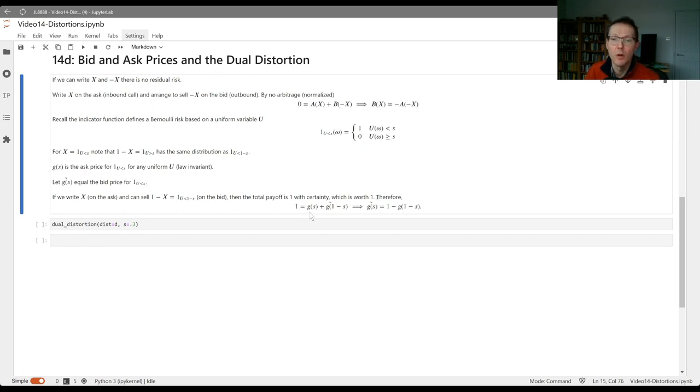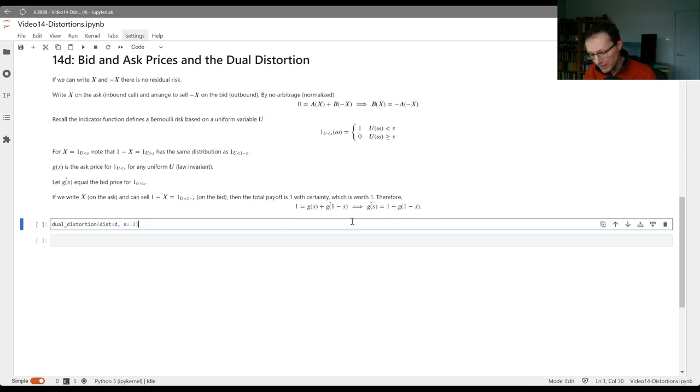So therefore, one is going to equal the ask for the above, plus the bid for the residual. And remember, the bid for the residual, the probability that the residual takes the value one is one minus s. So that's going to not be g check of s, it's going to be g check of one minus s. And therefore, the dual, the price of the dual is going to equal, the price of the dual at s is going to equal one minus g of one minus s. I'm swapping the meaning of s and one minus s there. And so that gives us a definition of g check equal to the bid price for one minus s. If we've got g, so we've got all the ask prices, we can compute the bid prices. So let's see what that looks like.